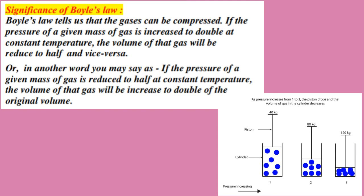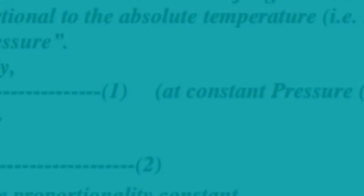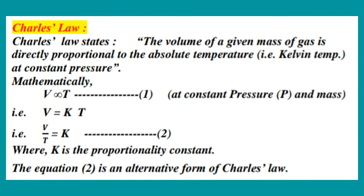Next is Charles's Law. Charles's Law states that the volume of a given mass of gas is directly proportional to the absolute temperature, that is Kelvin temperature, at constant pressure. So, Charles's Law can be written mathematically as V directly proportional to T, where T means temperature is in the Kelvin scale. This equation 1 is at constant pressure and mass of a gas.